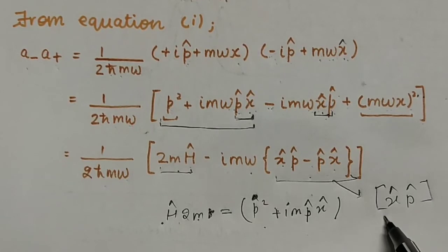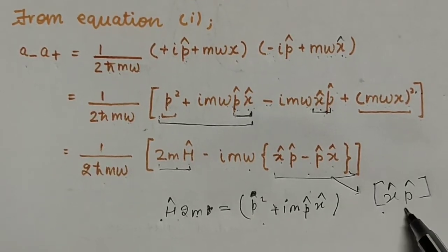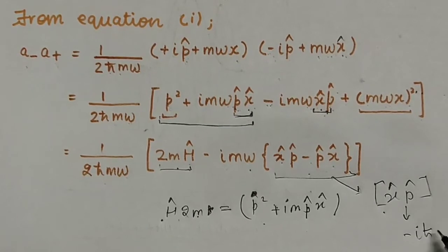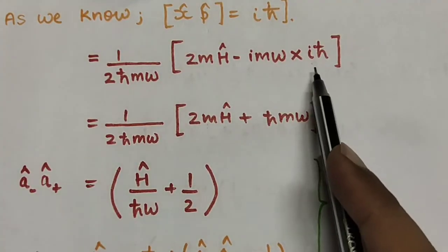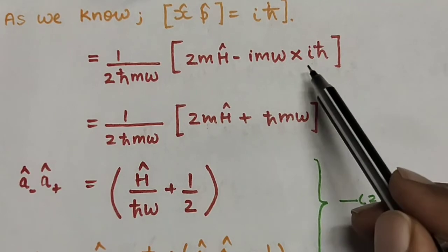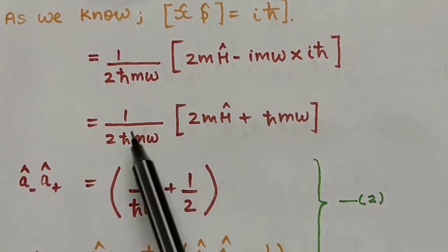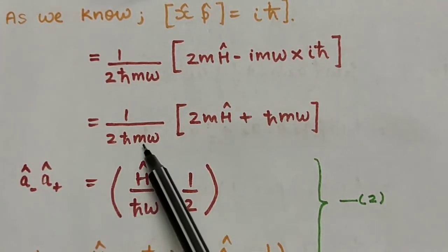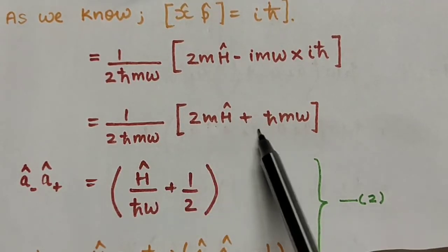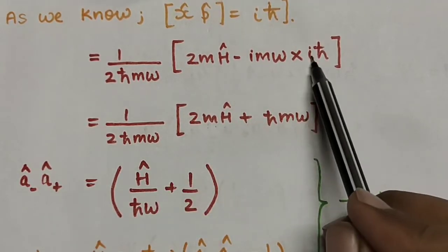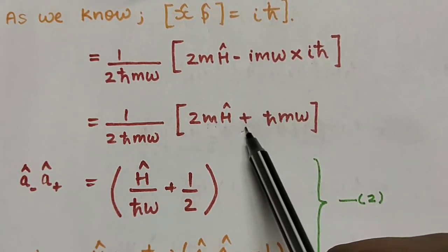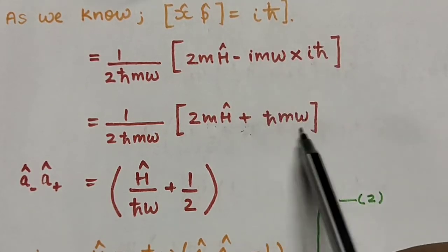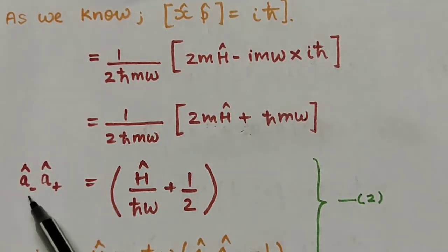Replacing [x, p] with iħ, the commutator term becomes −iħ. Wait — it is just iħ. So after substituting, the equation becomes 1 over 2ħmω times [2mH + ħmω], since i times i is −1 and minus times minus gives plus.